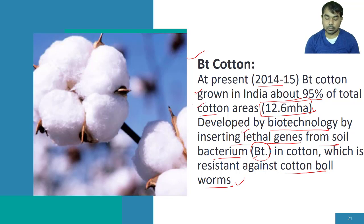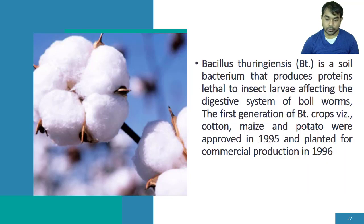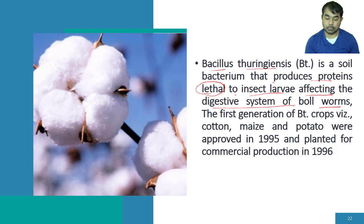The lethal gene has been taken from the soil bacterium Bacillus thuringiensis, and this gene is inserted into cotton with the help of biotechnology — that is why it is called BT cotton. The soil bacterium Bacillus thuringiensis produces a lethal protein to the insect larva, affecting the digestive system of the boll worm.